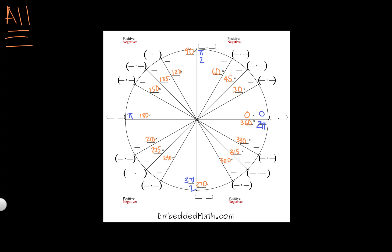So looking at our 45 degree angles — remember those are the quarter sections. So that would be π over 4. 2π over 4. 3π over 4. 4π over 4. 5π over 4. 6π over 4. 7π over 4. And 8π over 4 finishes the circle.